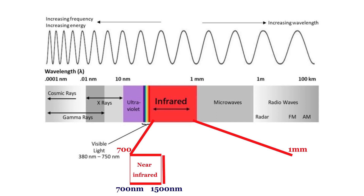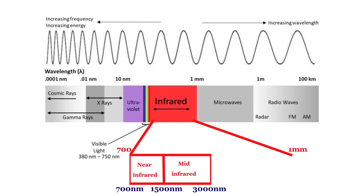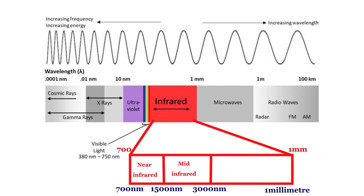The mid-infrared, approximately 1500 to 3000 nm, is used to study the fundamental vibrations of compounds. Finally, the far infrared extends between 3000 nm to 1 mm. It has low energy that can be used in rotational spectroscopy.